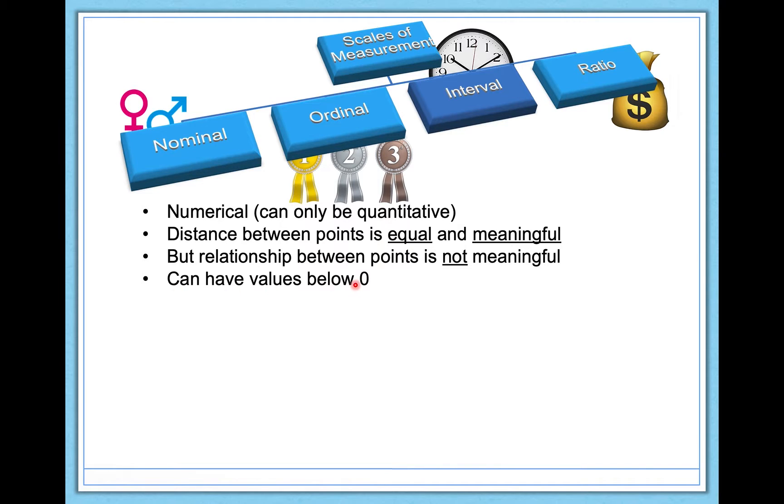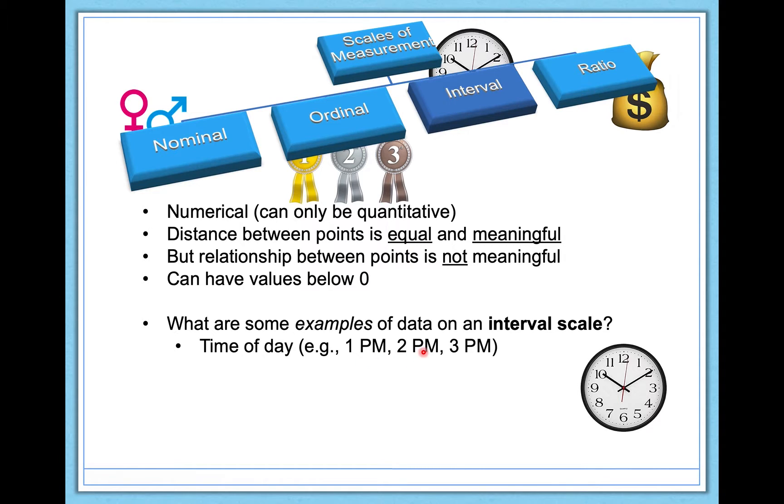Let's go through examples. I think interval is the weirdest to fully understand, and so examples are really important. I'll give you two. One is time of day, for example 1 p.m., 2 p.m., 3 p.m., 4 a.m., all of that. Another example is temperature in degrees Fahrenheit and also in degrees Celsius. Let's take temperature, degrees Fahrenheit, and evaluate it along these dimensions. First of all, it's numerical. I can put one degree Fahrenheit, two, three, six, whatever in my data set. So it's numerical.